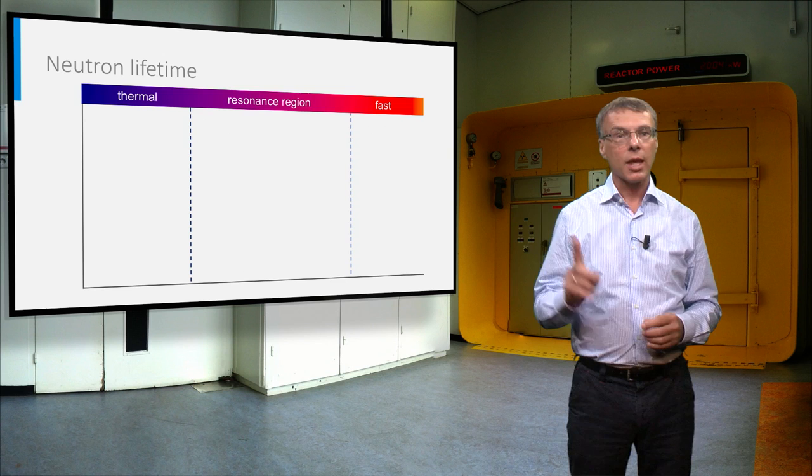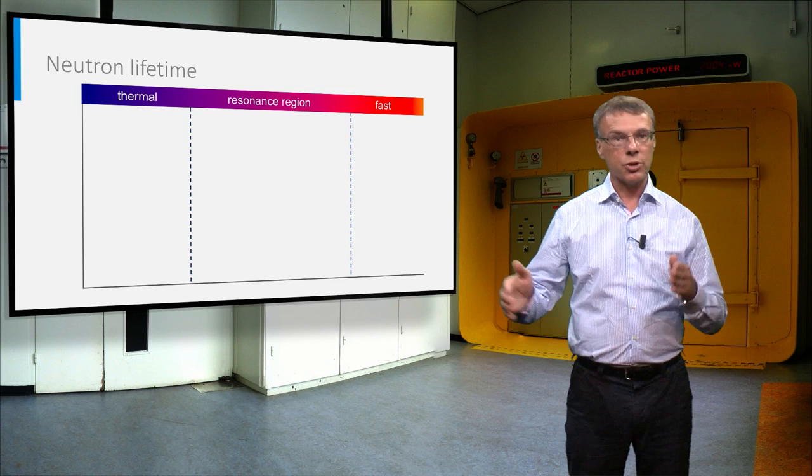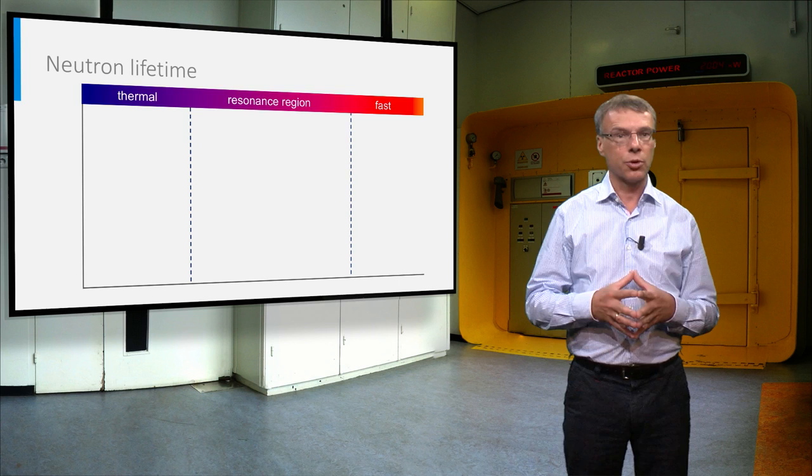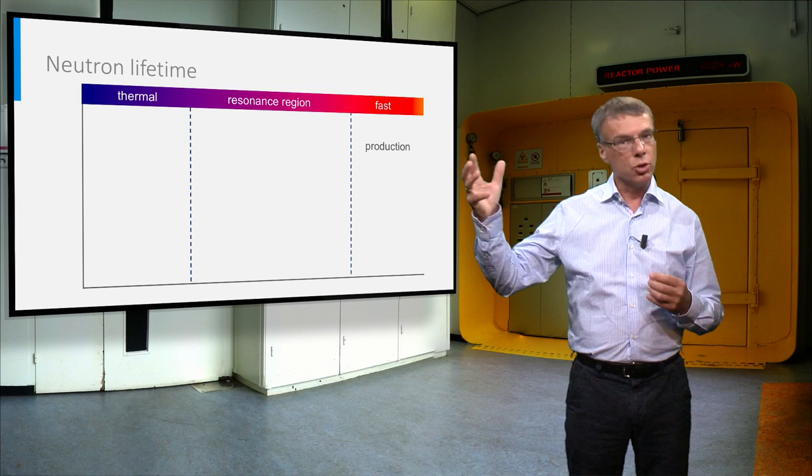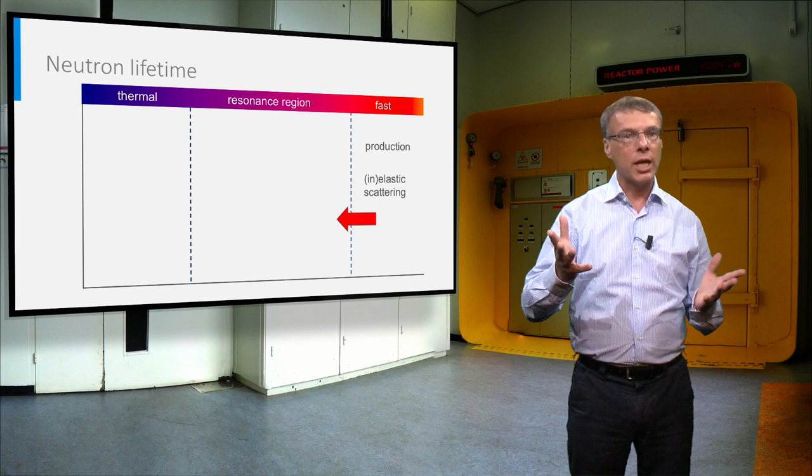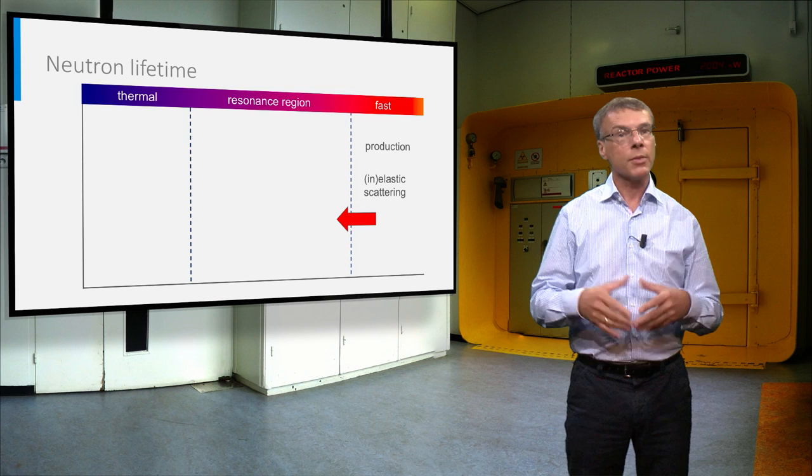This plot shows the processes of a neutron between its release as a free neutron and the moment it is absorbed in the reactor core or leaks away. A fission neutron is released at very high energy of about 2 MeV, and by elastic and inelastic collisions it will lose energy and reach the resonance range of uranium-238.